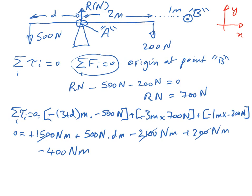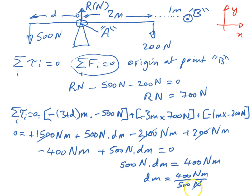So, minus 400 newtons meters plus 500 newtons times d meters equals 0. So, adding 400 newtons meters to both sides, we have 500 newtons times d meters equals 400 newton meters. Dividing both sides by 500 newtons, then we have d meters is equal to 400 newton meters divided by 500 newtons, which is equal to 0.8 meters as before.